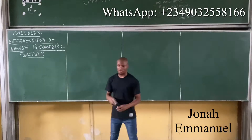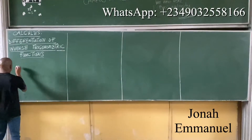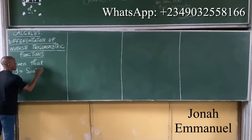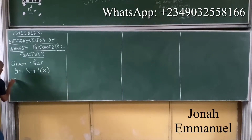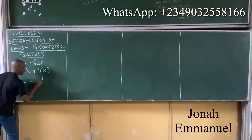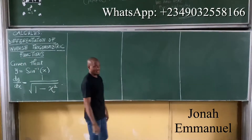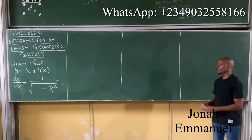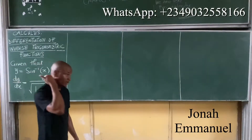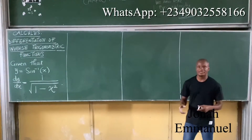Let's look at the differentiation of inverse trigonometric functions. Given that y is equal to sine inverse of x, then dy over dx is equal to 1 over the square root of 1 minus x squared.